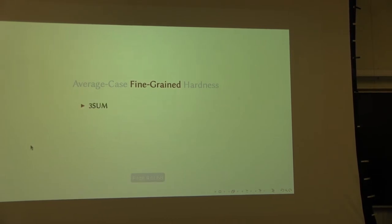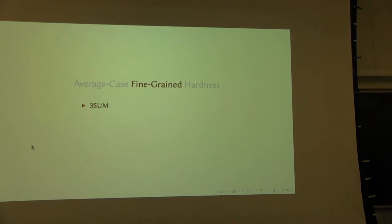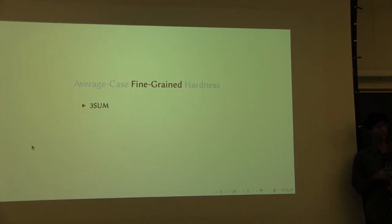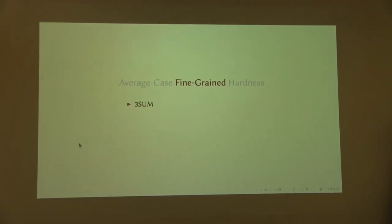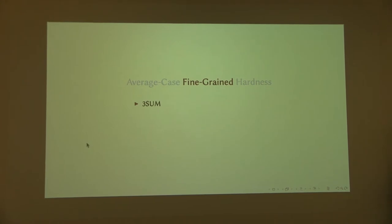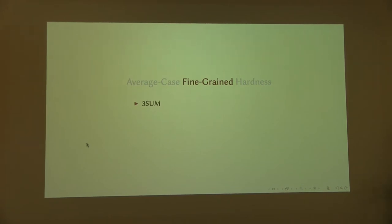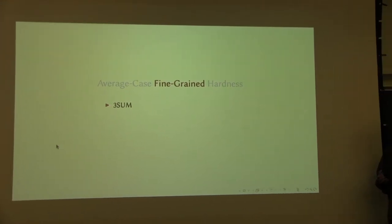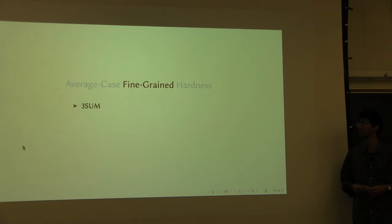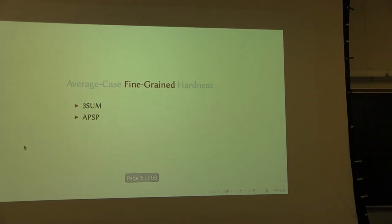Just to give you a flavor of what sorts of problems these are: one example is what is called the 3SUM problem. I give you n integers and ask whether there are three numbers in this set which sum to zero. You can trivially do this in n-cubed time by going through all possible triples. But it turns out there are non-trivial algorithms which can do it in n-squared time, and after several decades of research people have not been able to improve upon this significantly. This problem turns out to be related to lots of other problems in graph theory and dynamic problems.